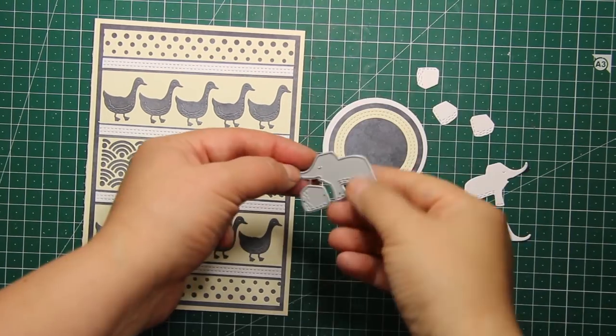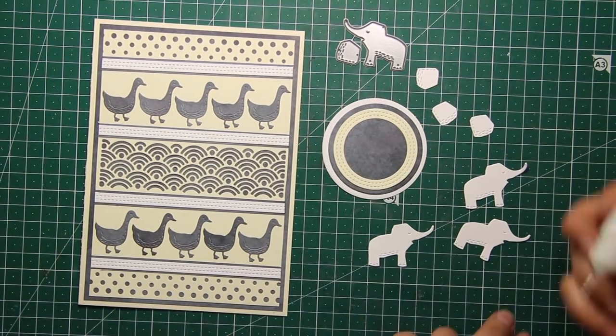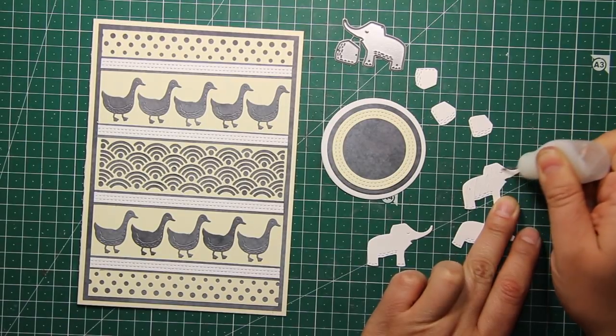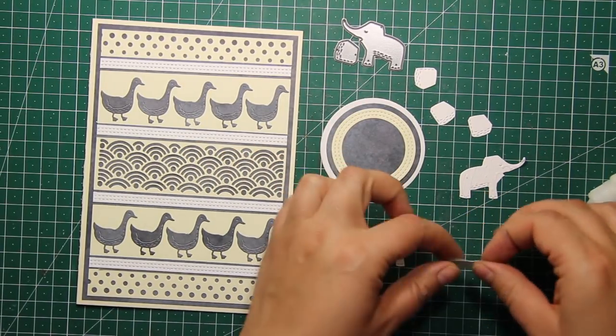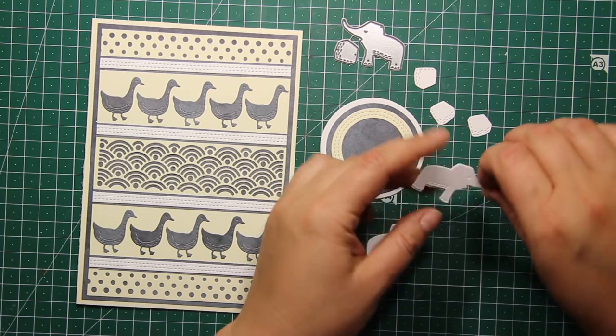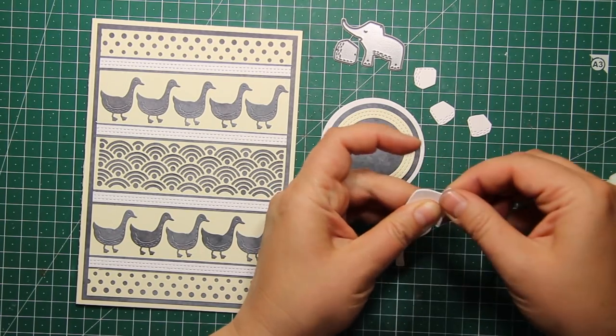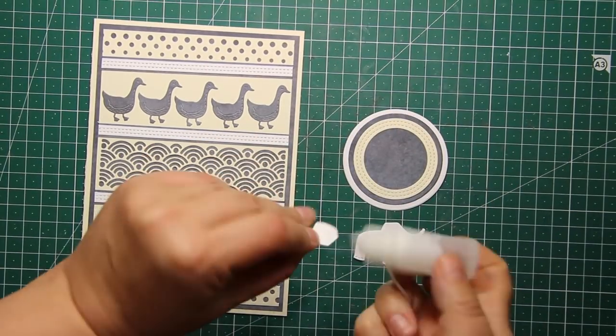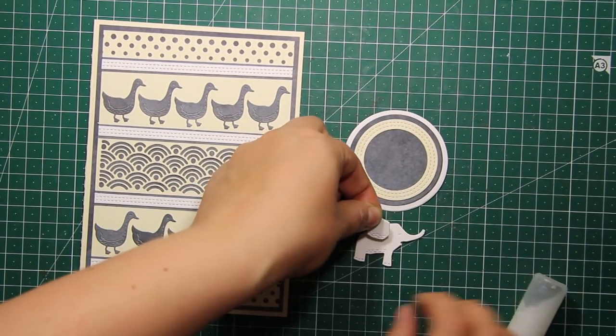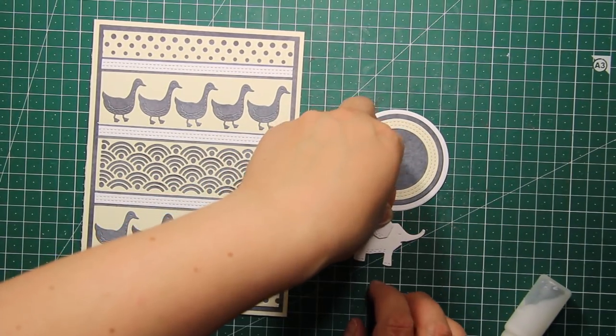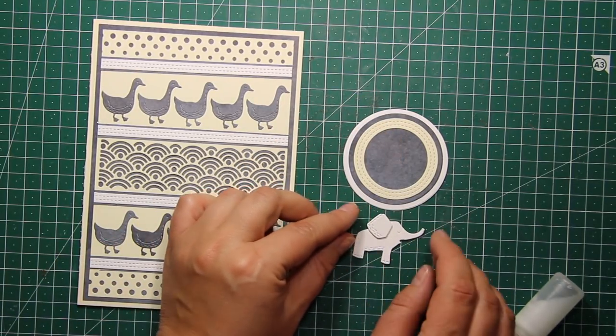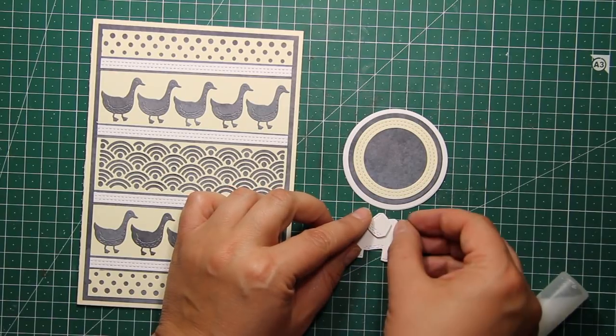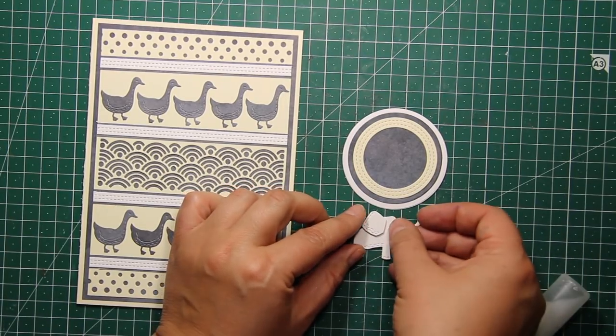That last little die is a Whittle Elephant. I've die cut it three times out of white cardstock just to make it more dimensional. So now I'm layering all three elephants to make them look like it's a chipboard piece. I have also layered a little ear image and now I'm sticking it down onto the elephant. Then I'm going to add the elephant inside the circle.